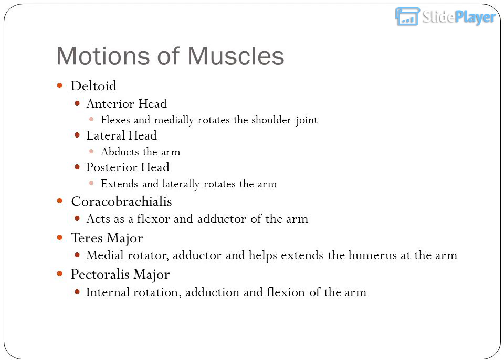Posterior head extends and laterally rotates the arm. Coracobrachialis acts as a flexor and adductor of the arm. Teres major is a medial rotator, adductor, and helps extend the humerus. Pectoralis major performs internal rotation, adduction, and flexion of the arm.